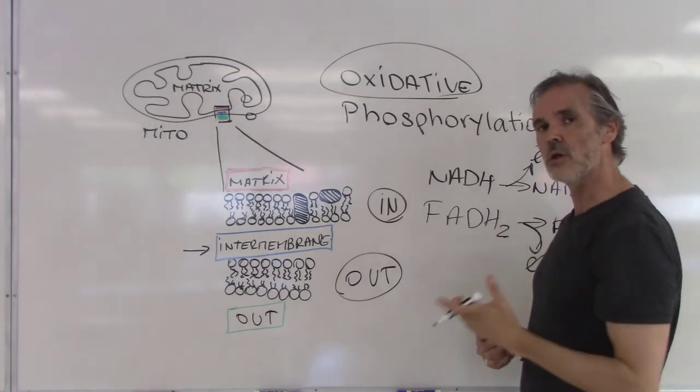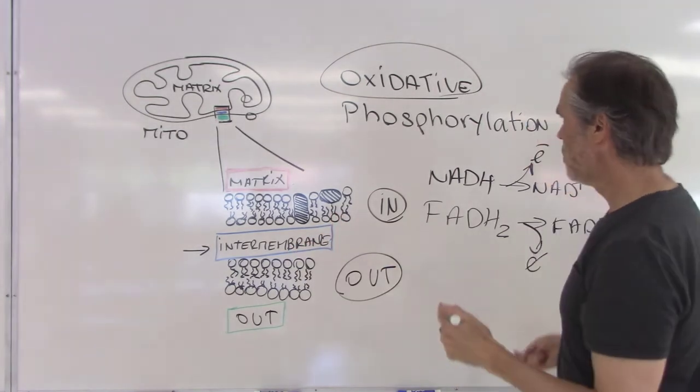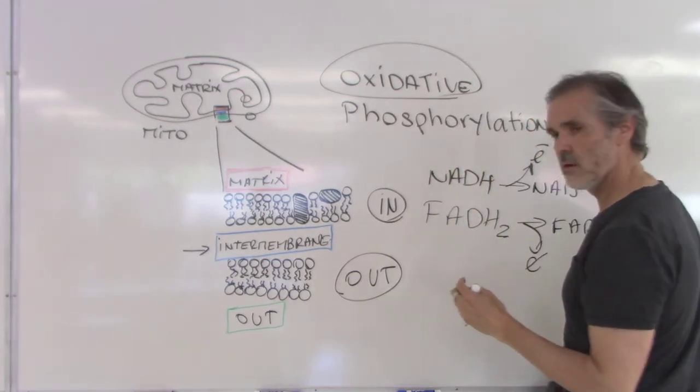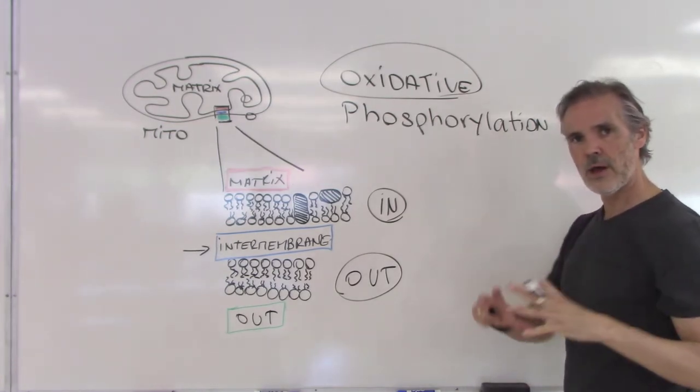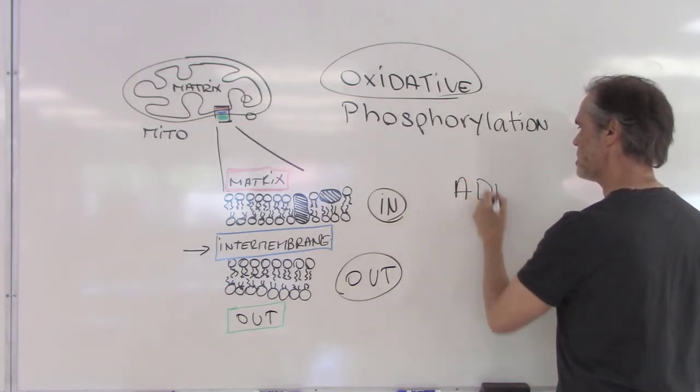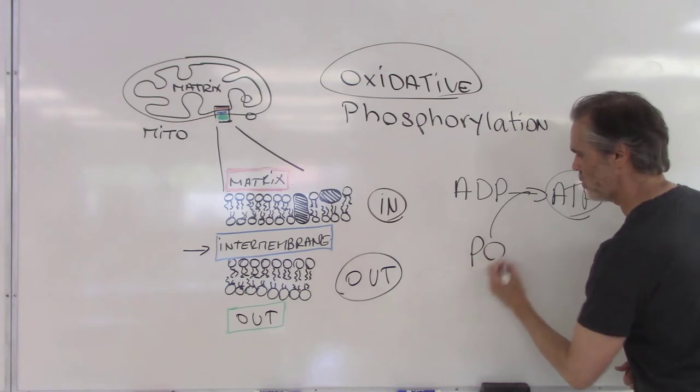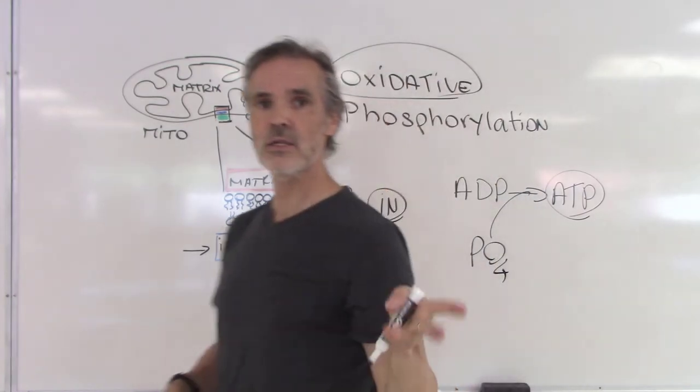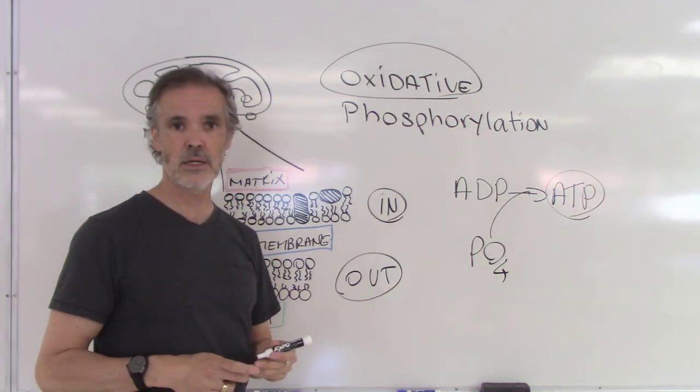Now, why do we have phosphorylation? If you remember, phosphorylation means adding phosphate. The phosphorylation in oxidative phosphorylation means this, and that's a super important phosphorylation here. What it means is that in a high quantity, a lot of that, we're going to convert ADP into ATP. And that happens with the addition of a phosphate. So that's where the phosphorylation in oxidative phosphorylation is coming from.